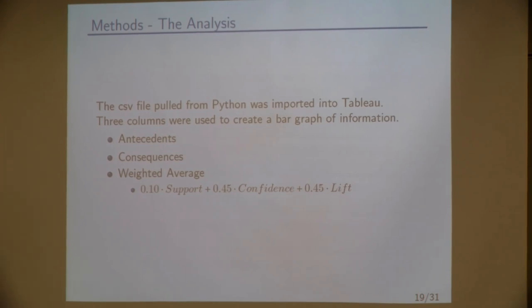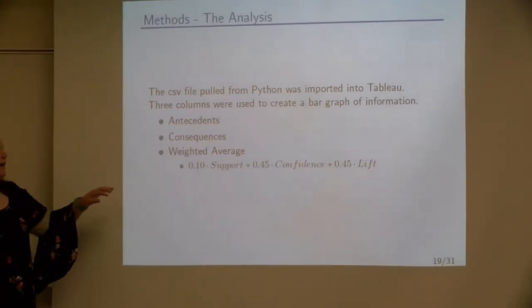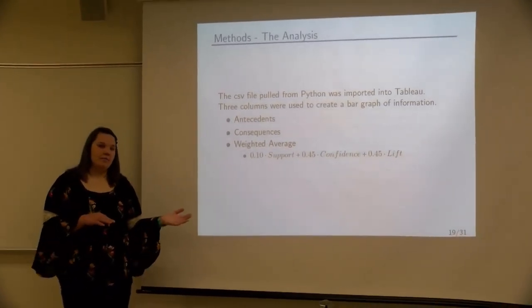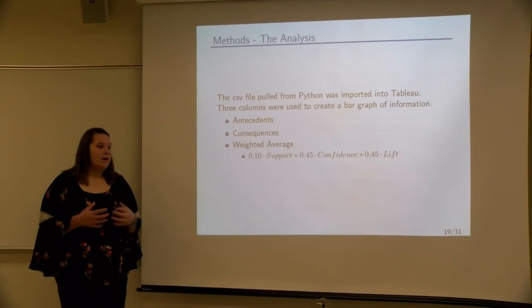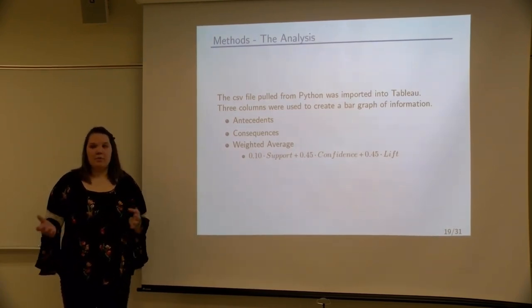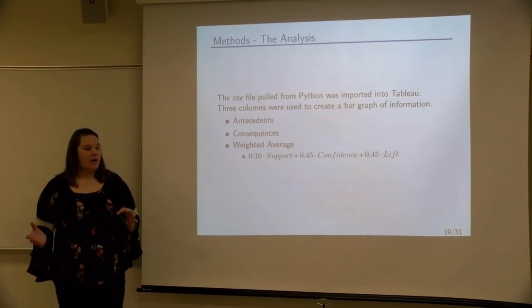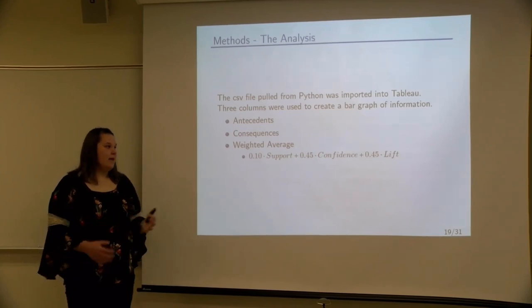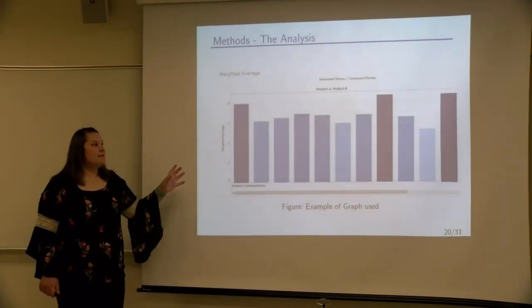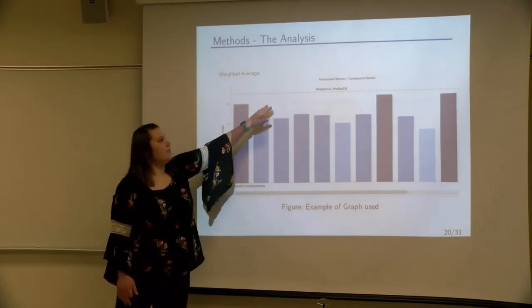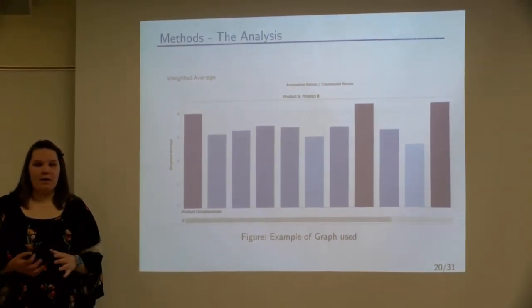So from the CSV file, we threw that into a tableau and we made a bar graph. So in the bar graph, we have the antecedents and consequences in the columns and then the weighted average in the row. So instead of looking at the probabilities all individually, we decided to put them together and create an equation. So we did 0.1 times support and we did a smaller support because we didn't think it was quite as important. But we still wanted it considered into the equation. And then we did 0.45 times confidence and 0.4 times lift. So this is an example of what the bar graph looks like. As you can see at the top, we have the antecedents and at the bottom, we have our consequences. And then on the columns, we have the weighted averages.